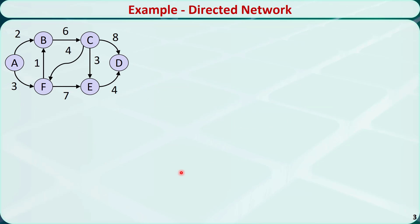Now let's see an example. This is a directed network. It has 6 nodes and 9 arcs. Suppose we want to find the shortest path from node A to node D. We can think of node A as a supply node and node D as a demand node. All other nodes B, C, E, and F are transshipment nodes.